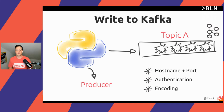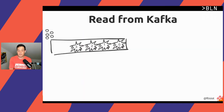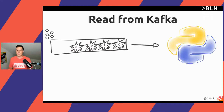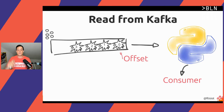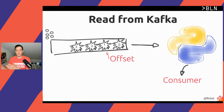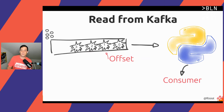On the other side, if we have data in a Kafka topic and want to read it with an application, that application will be called a consumer. What the consumer does is it reads event number zero and then communicates back to Kafka: event number zero done, let's move to one. Reads event number one, communicates back: one done, let's move to two, and so on.